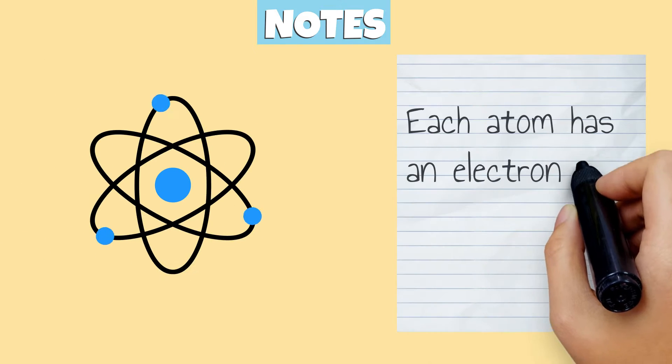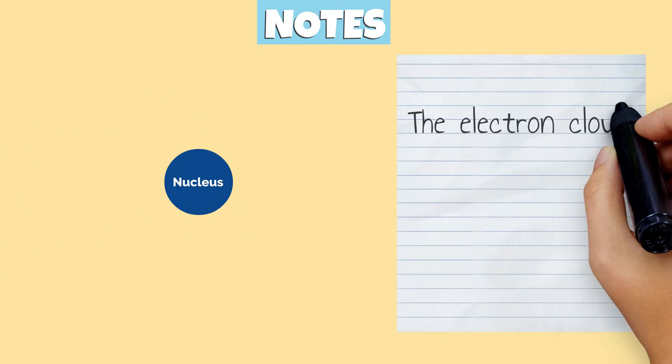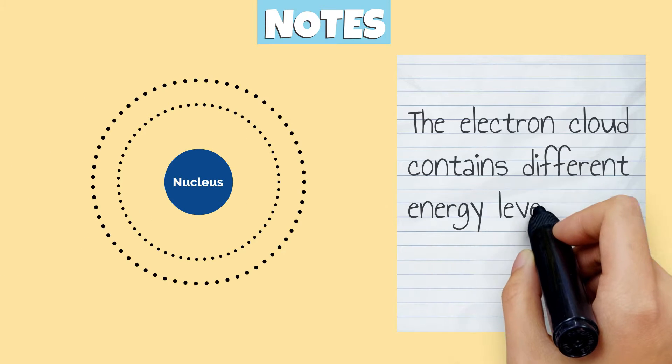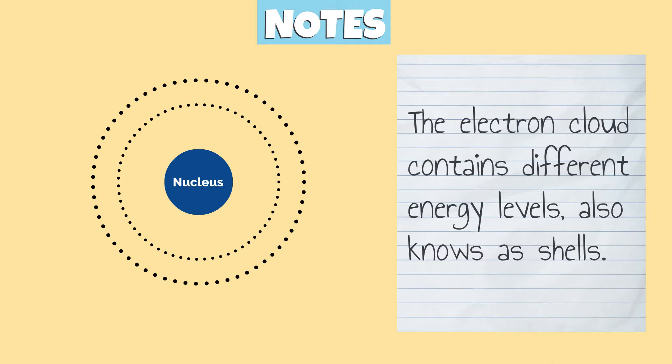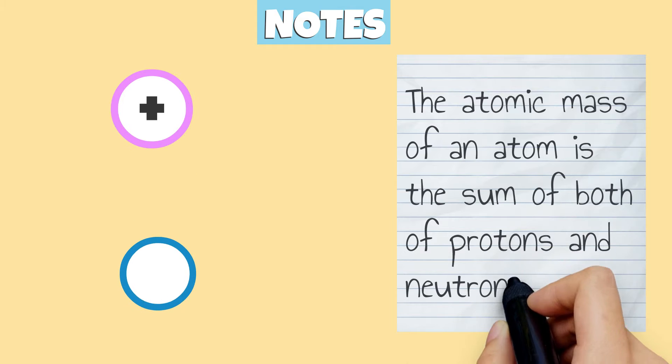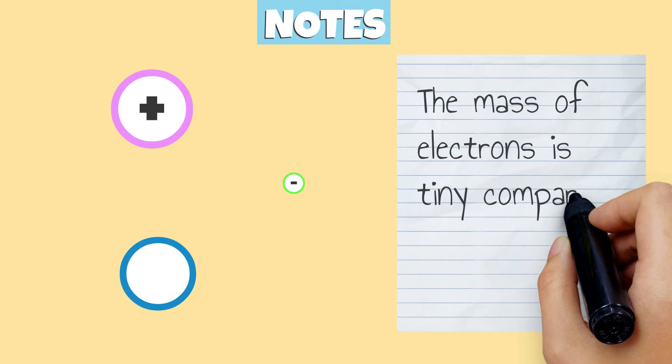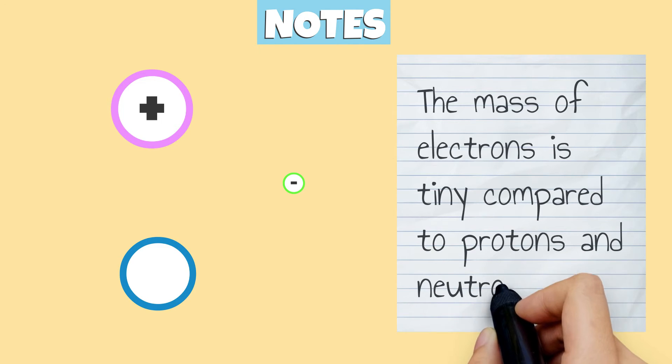Each atom has an electron shell that surrounds a nucleus. The electron cloud contains different energy levels, also known as shells. The atomic mass of an atom is the sum of both protons and neutrons. The mass of electrons is tiny compared to protons and neutrons.